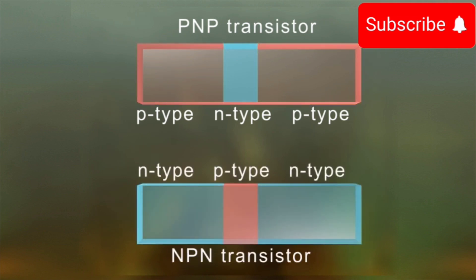NPN transistor: In this type of transistor, there is a thin wafer of P-type material sandwiched between two N-type semiconducting materials.